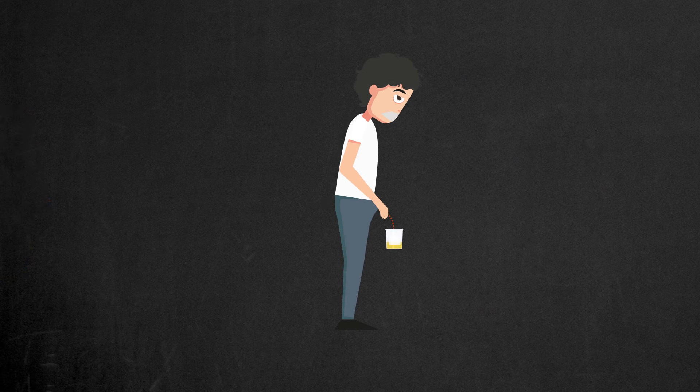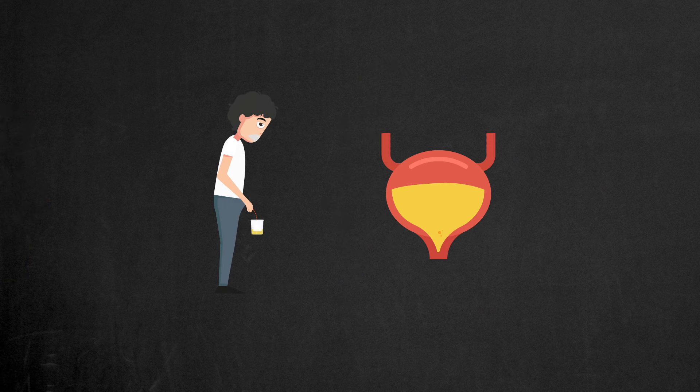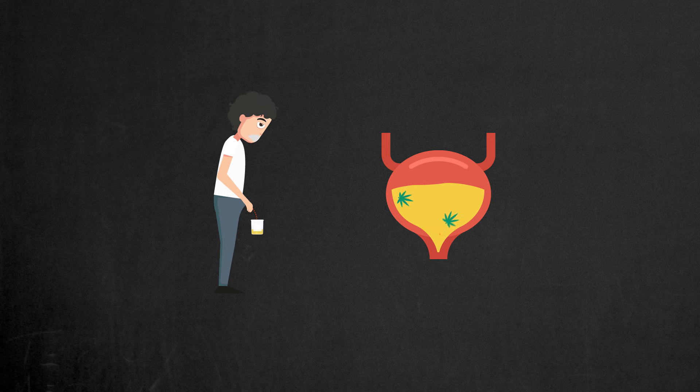It should make you urinate frequently, so THC metabolites are flushed out of the bladder and their concentration in the urine goes down.